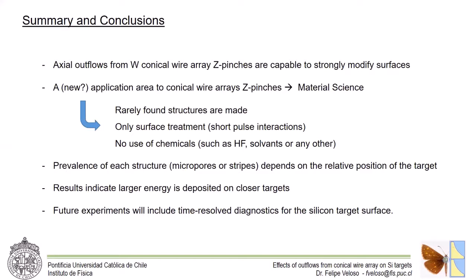All of these results indicate that targets located farther from the array receive less energy than the closer ones. This is most likely due to the relative effect of each outflow on the surface. It means closer targets are affected by both dense plasma jet and ion outflow. The dense jet, on the other hand, has poor or no effect at all for the farther targets.